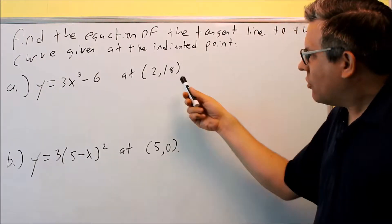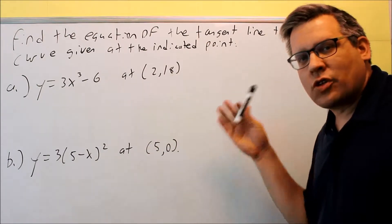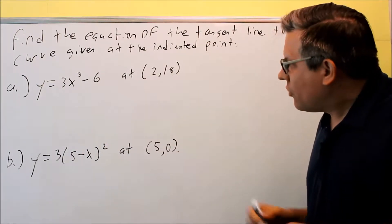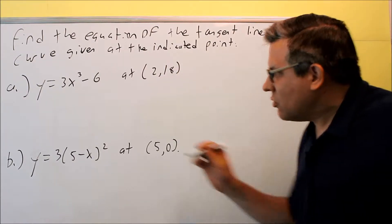Before, we'd have to find the x sub zero, the two, plug that in there, go through that whole process with the difference quotient. Instead, we're just going to first find the derivative, and then I'm going to go ahead and put in the x value of two, and that's going to give me the slope. So let's do that.